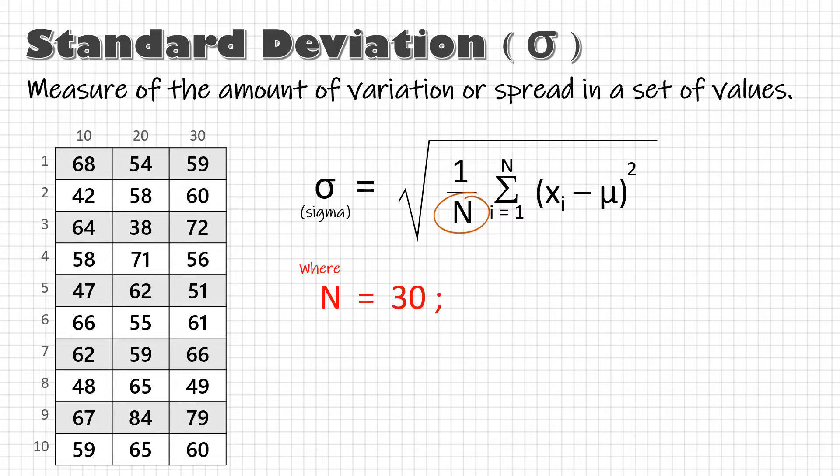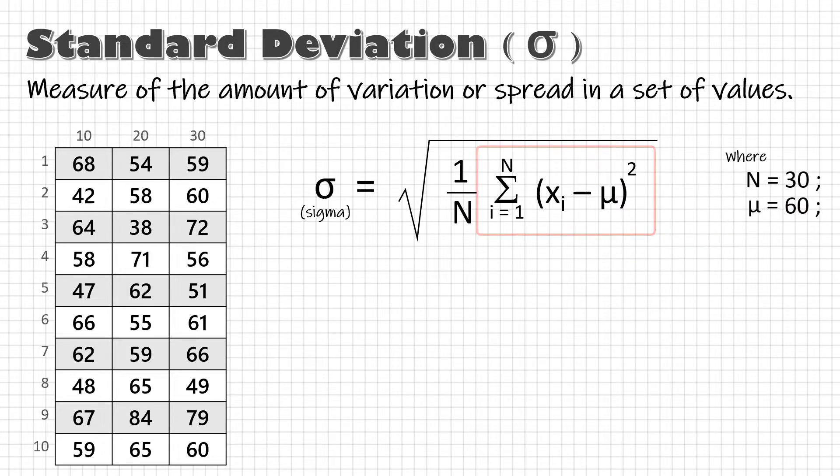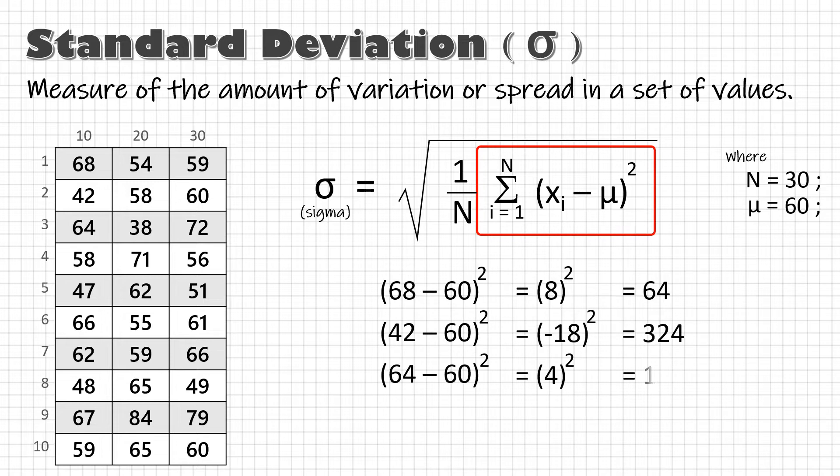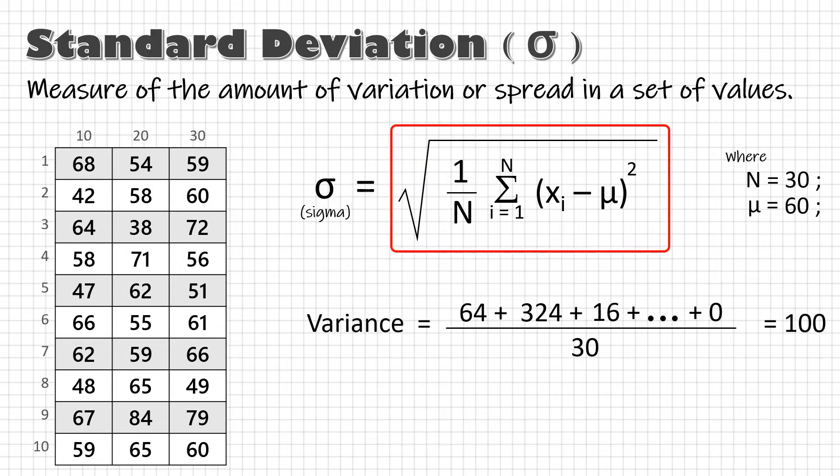N is the number of data points, that is, 30. Mu is the average or mean value of all the 30 numbers and can be calculated by dividing the sum of all data points by 30, which comes out to be 60. Now, first, we will calculate the difference of each data point from the mean and square the result of each outcome. Mean of these values is called variance and the standard deviation is the square root of variance.